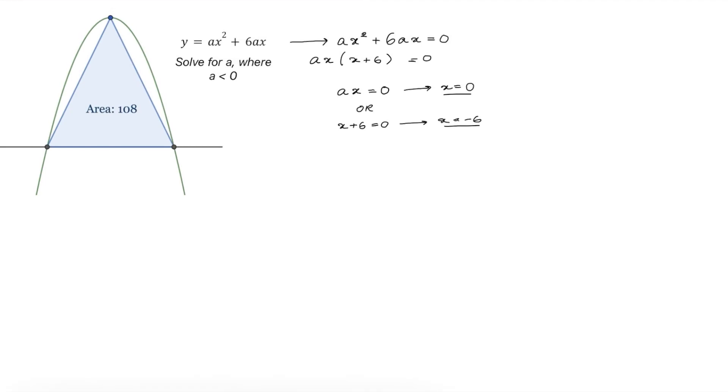That means that the coordinates of this point are negative 6 comma 0, and this point is at the origin. It's at 0 comma 0.